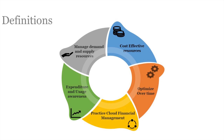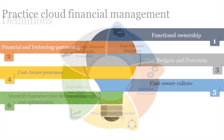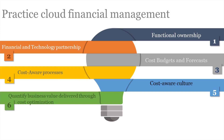AWS outlined five focus areas that encompass cost optimization in the cloud. The first is Practice Cloud Financial Management. Cloud financial management answers the 'how' of cost optimization. It defines the change in the entire culture of your organization as it moves to cloud or seeks optimization to realize business value and financial success.